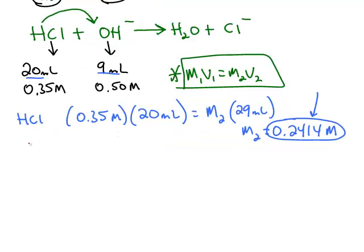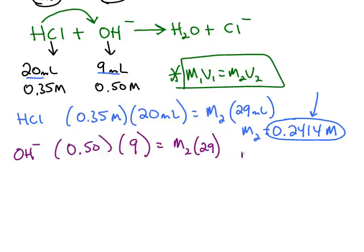We're going to do the same thing for the hydroxide. 0.5 molar, we use 9 milliliters. Total volume, 29. So the hydroxide dropped from 0.5 down to 0.1552 molar.